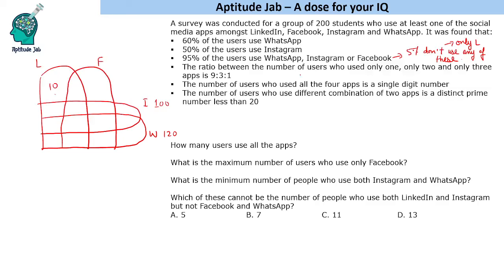The ratio between the number of users who use only 1, only 2 and only 3 apps is 9 ratio 3 ratio 1. So we have 4 kinds of users: either they use 1 app, 2 apps, 3 apps or all 4 apps. This ratio is given as 9:3:1. And further we are given that the number of users who use all the 4 apps is a single digit number. So this is a single digit number and the total number of users is 200.